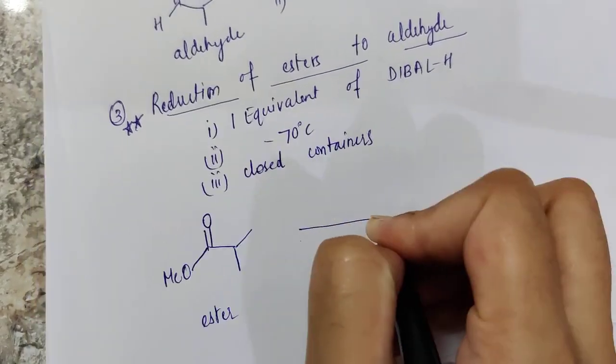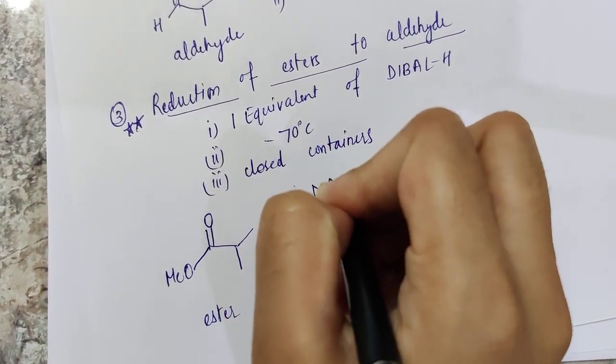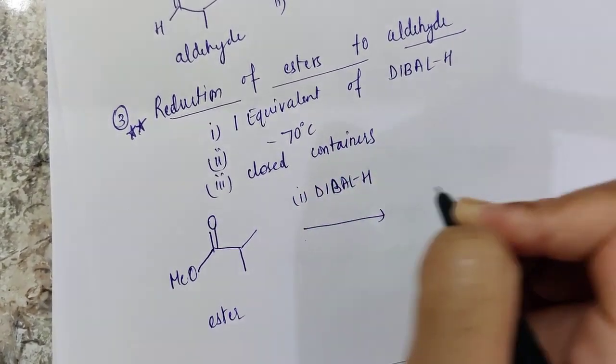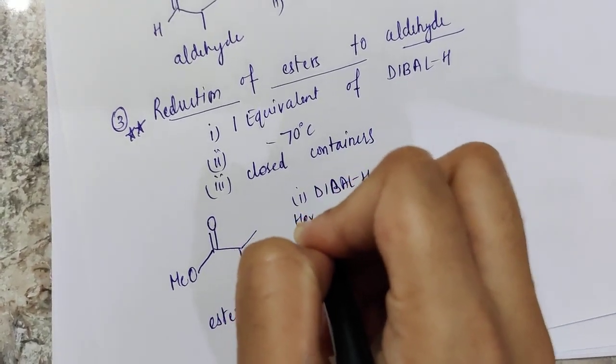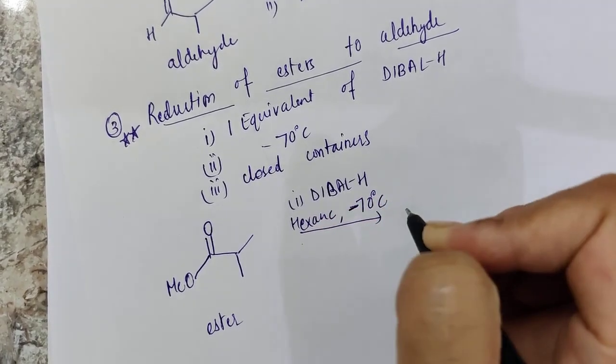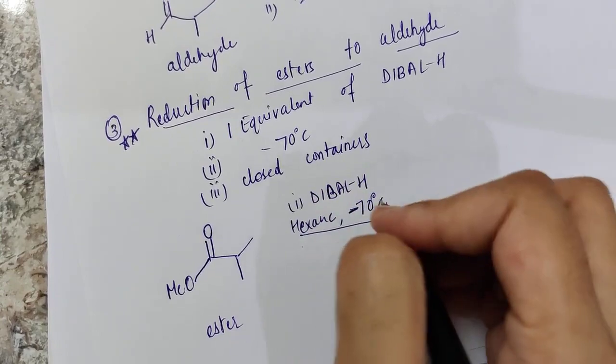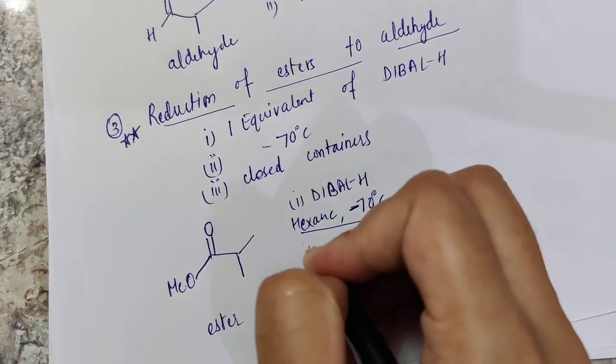So this is our ester. This ester is firstly treated with DIBAL and only one equivalence of DIBAL in hexane at around minus 70 degrees Celsius is maintained. And the system or the container is being closed.